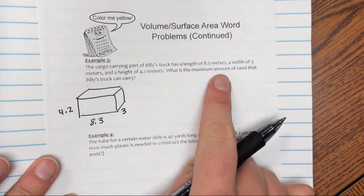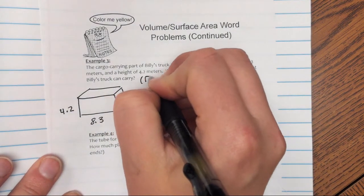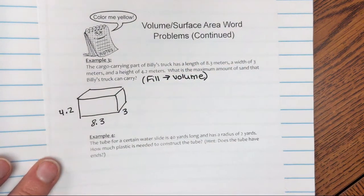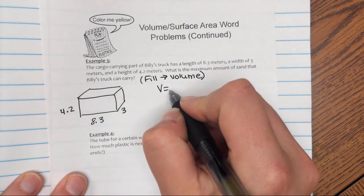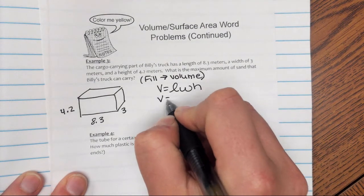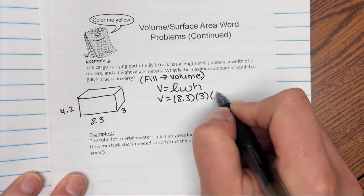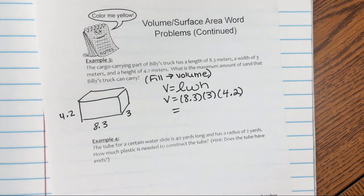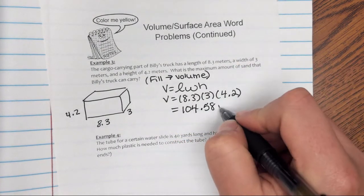I'm thinking about putting sand inside the bed of this truck, so I'm going to be filling it up. When I fill something up, I'm looking for volume. Filling up means volume, so I'm going to use volume equals length times width times height. My length is 8.3, my width is 3, and my height is 4.2. Multiplying 8.3 times 3 times 4.2, I get 104.58 meters cubed.